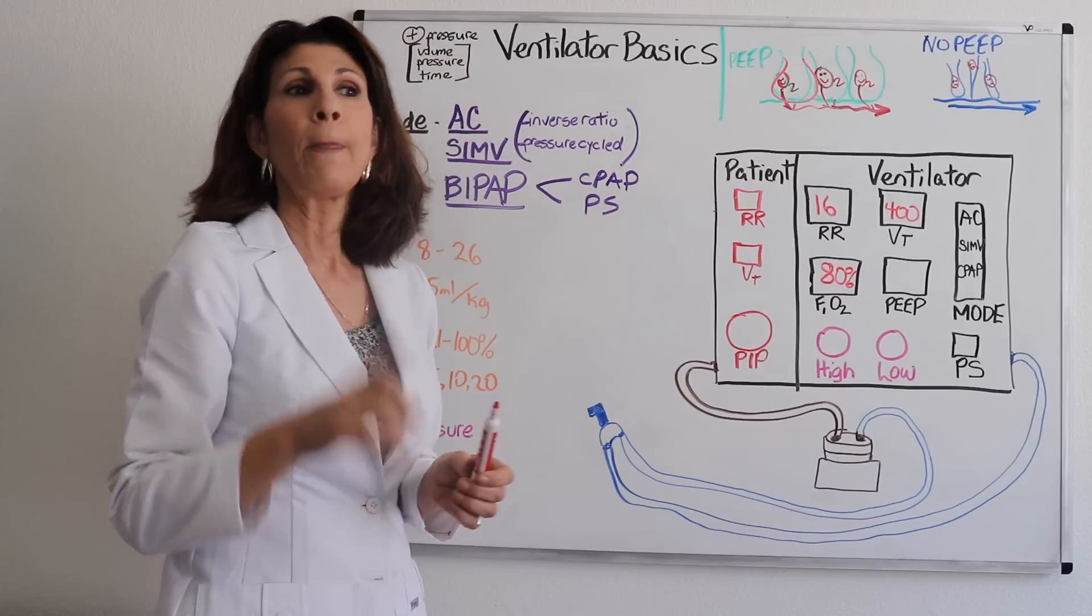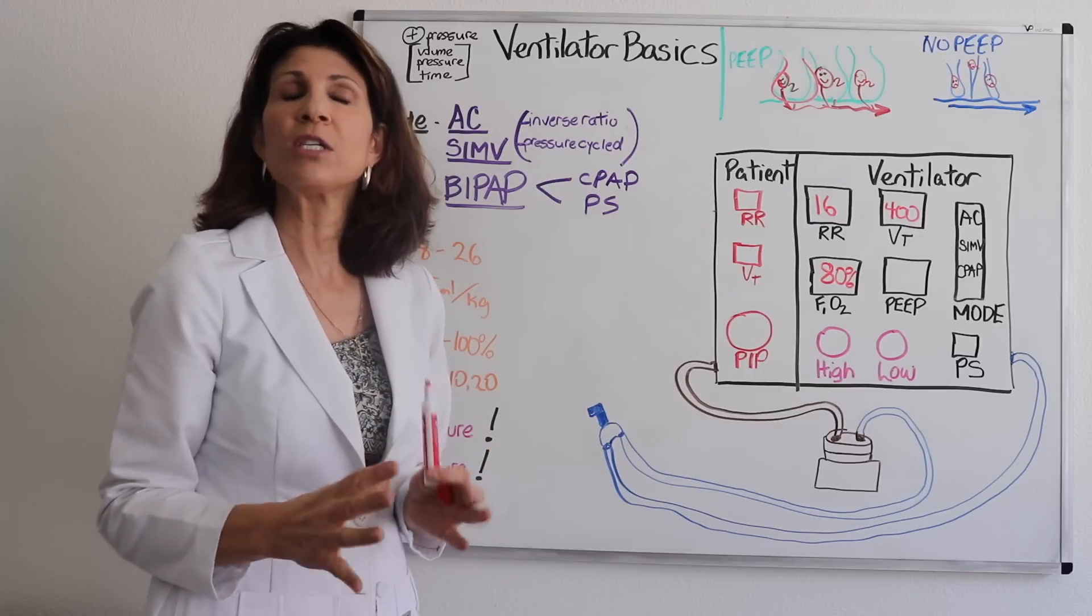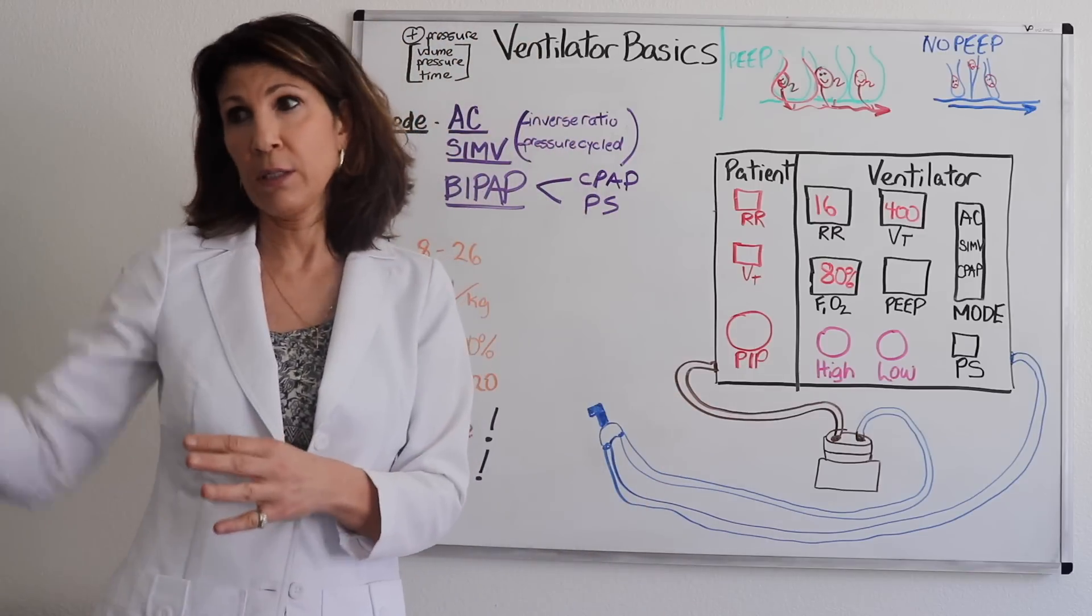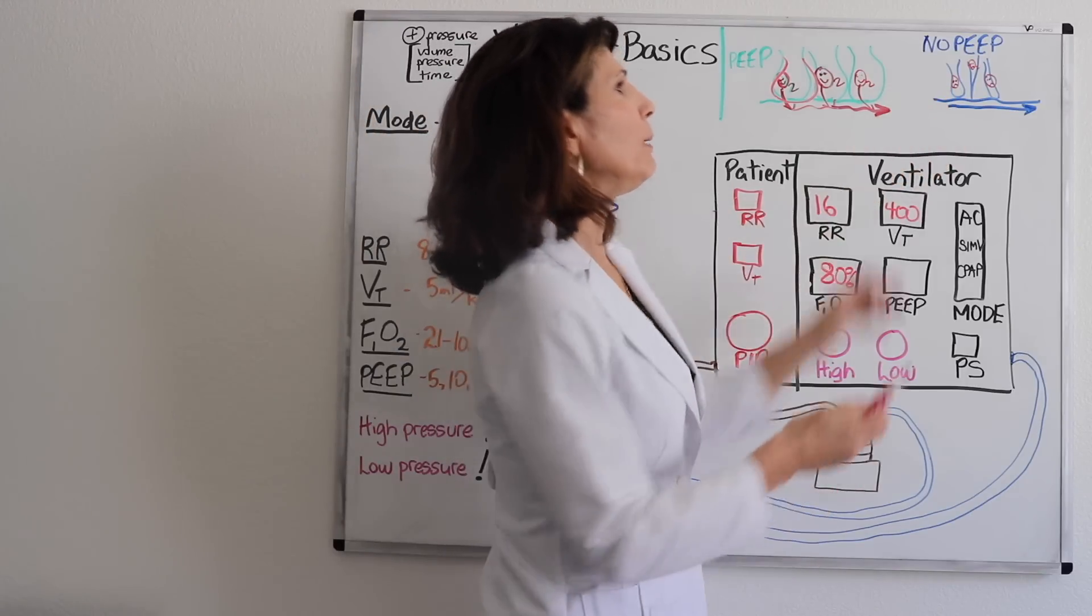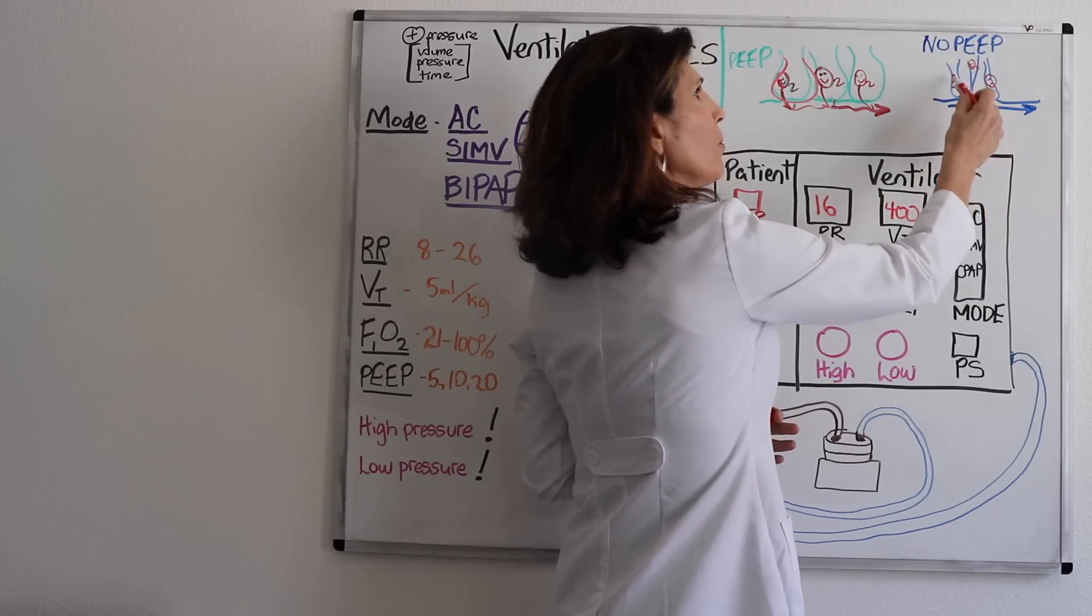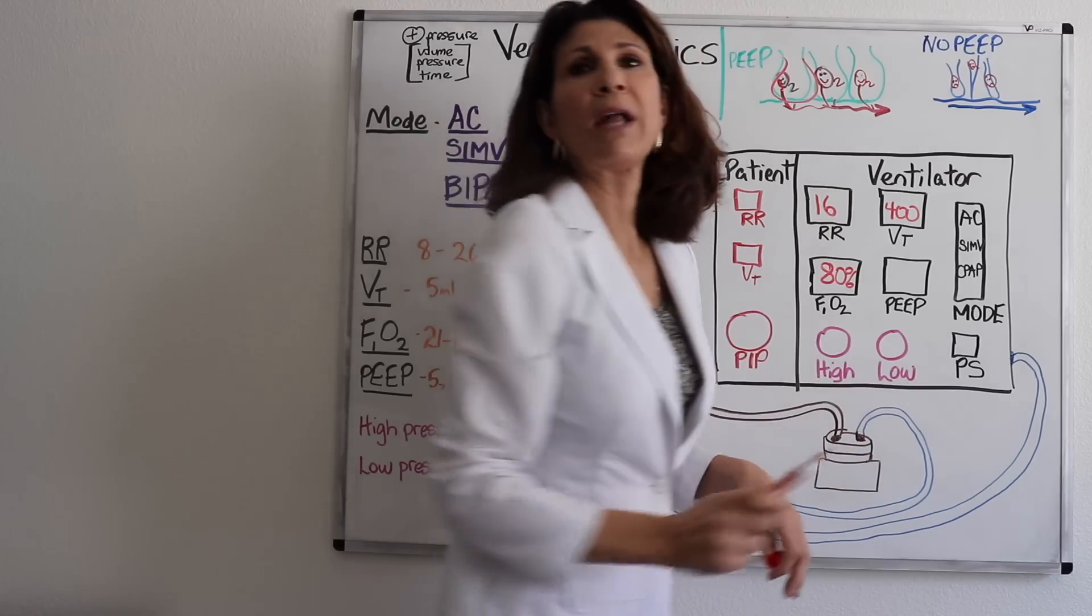So PEEP and FiO2 are the two maneuvers on the vent that improve oxygenation. That's an important concept when we talk about what affects the different components on an ABG. So you can see this one set, no PEEP. And the alveoli don't have that extra pressure. The diffusion of gases is just diminished and they're not happy at all.